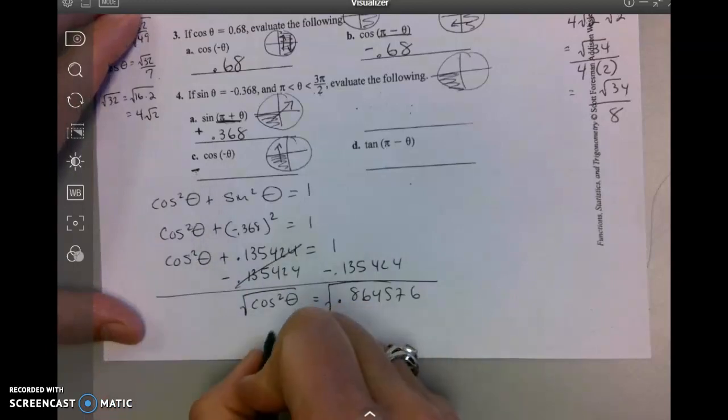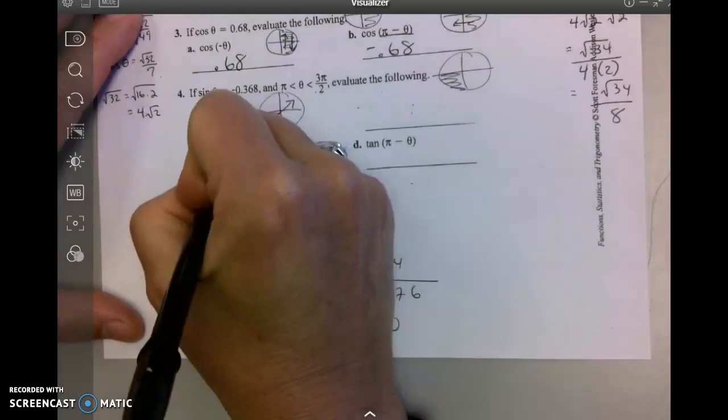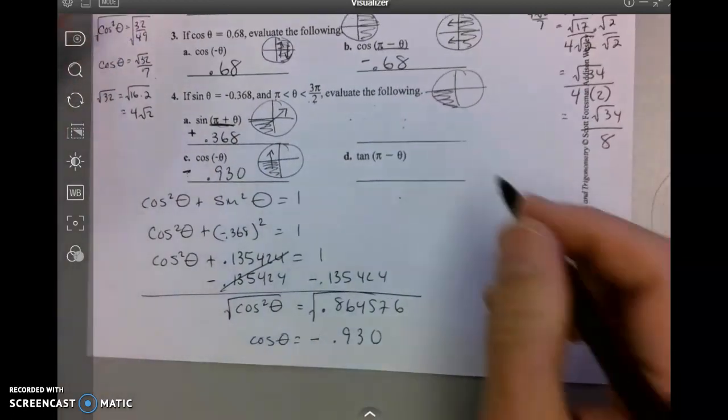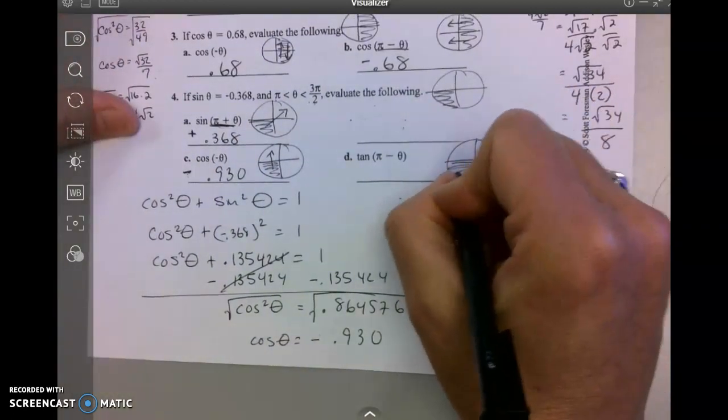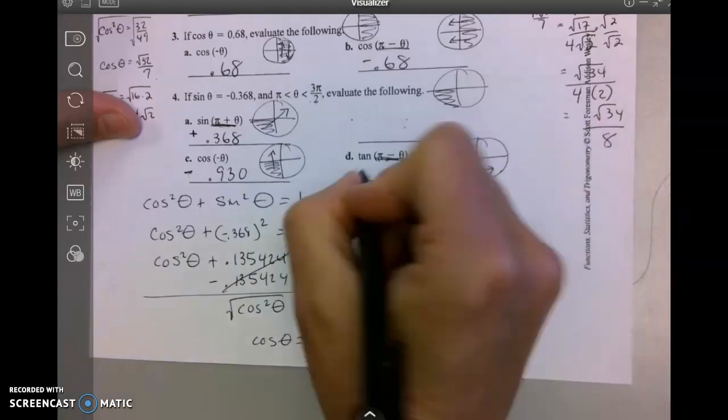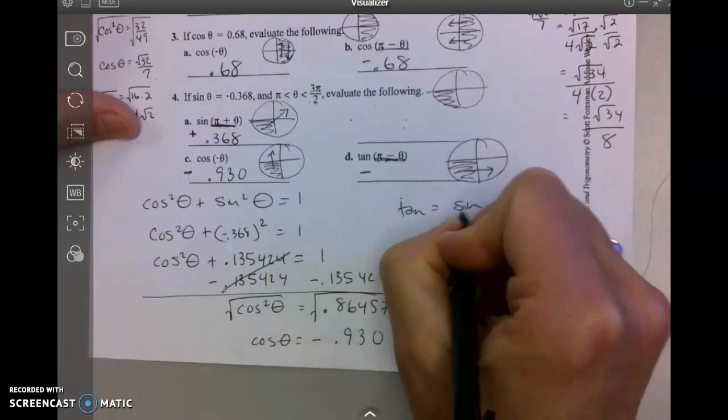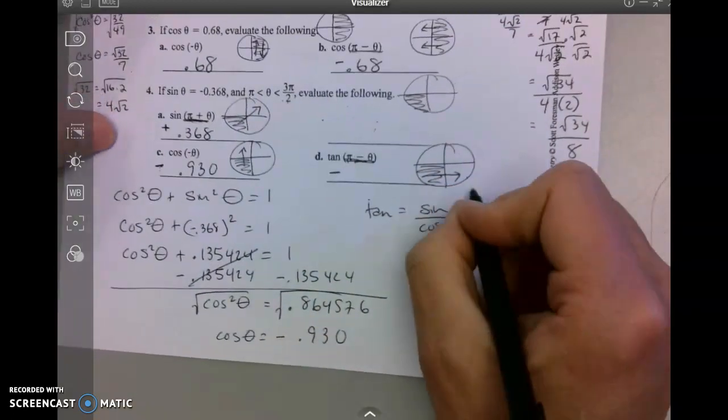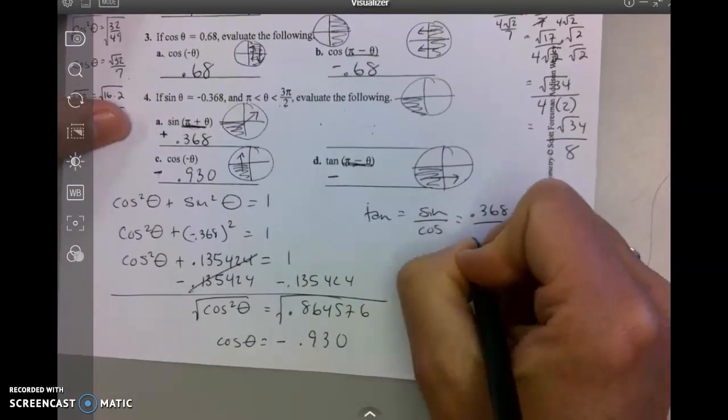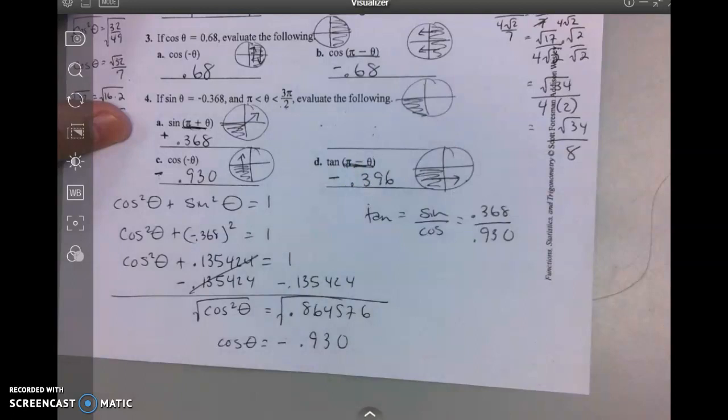Take the square root. I only need the negative answer and I get -0.930. Tangent, again here I am. This means move side to side. Tangent in this quadrant is negative. And tangent is sine over cosine, so it's -0.368 divided by -0.930, and I get 0.396.